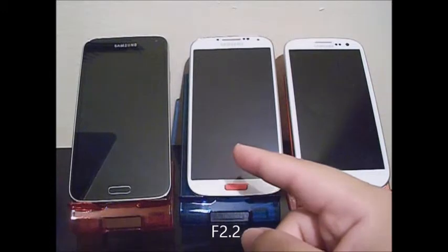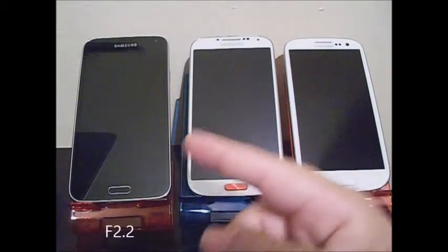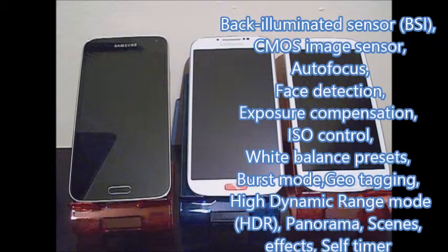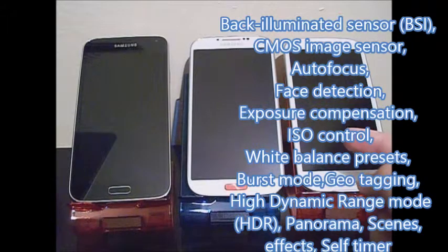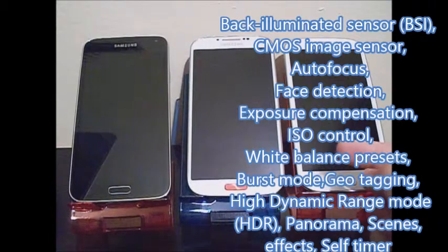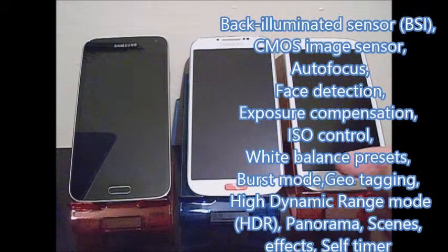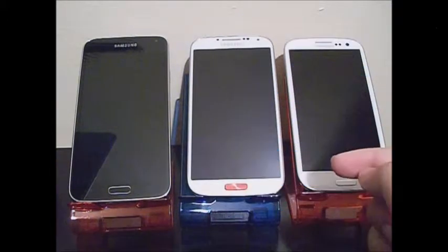The camera features on the Samsung Galaxy S3 include: back-illuminated sensor BSI CMOS image sensor, autofocus, face detection, exposure compensation, ISO control, white balance, burst mode, geo-tagging, high dynamic range mode (HDR), panorama, scenes, and effects.